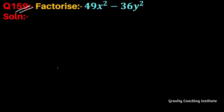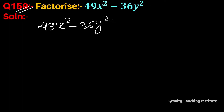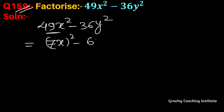Question number 159: factorize 49x² minus 36y². First, we change the terms into the form of a square. 49 is the square of 7, so we write (7x)², and 36 is the square of 6, so we write (6y)².